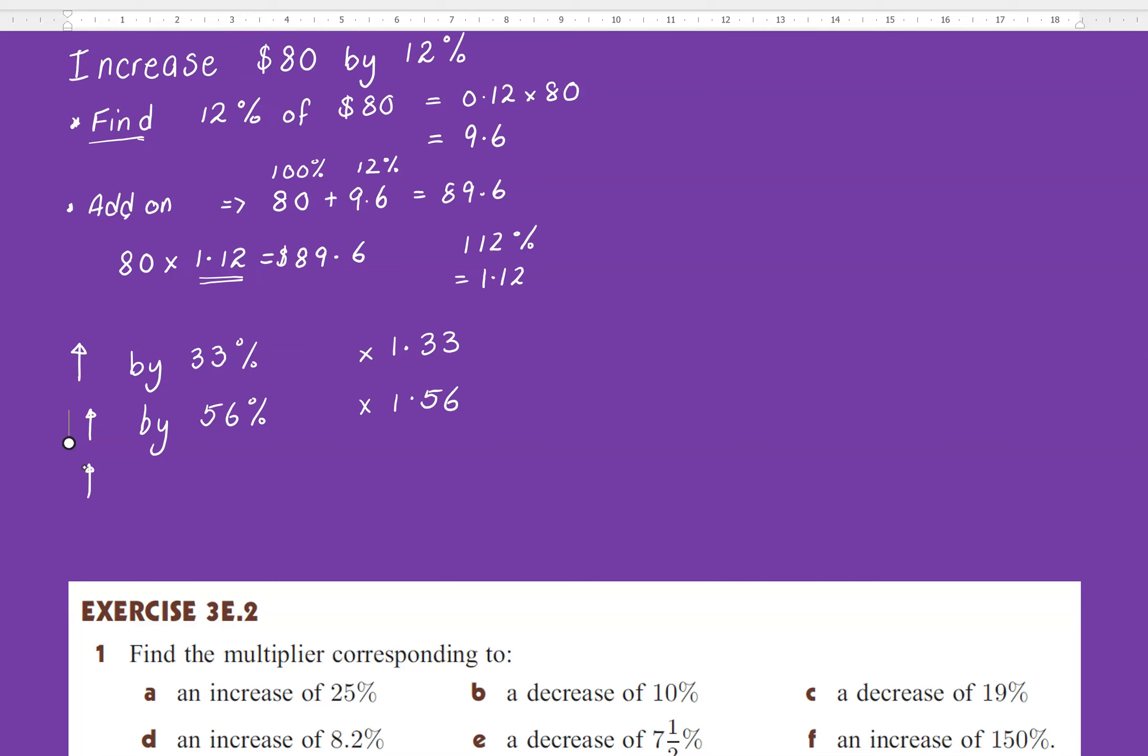Now careful, what happens if I increase by 5%? What will I multiply by? Don't say 1.5. It has to be 1.05. Because if you multiplied by 1.5, that means you're actually increasing by 50%. Does that make sense?